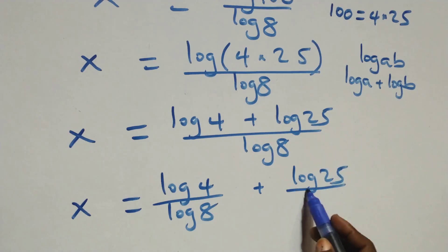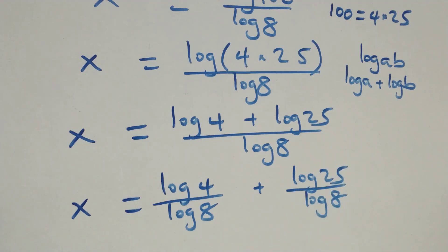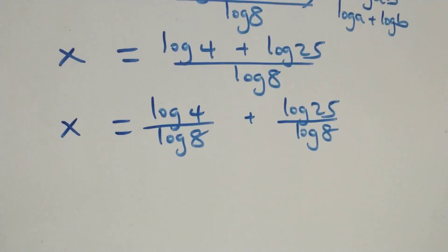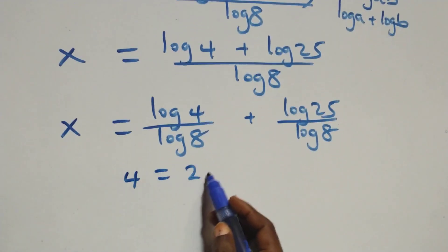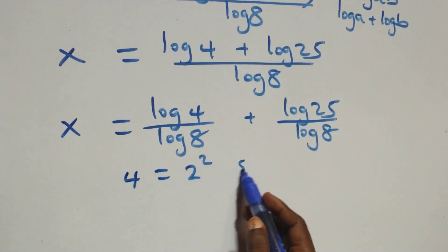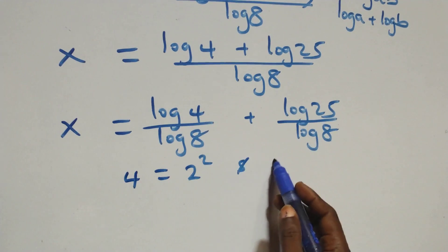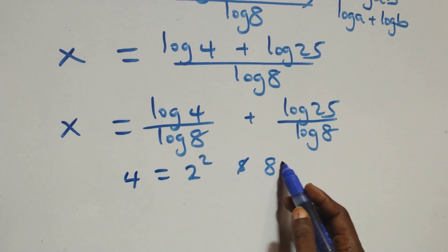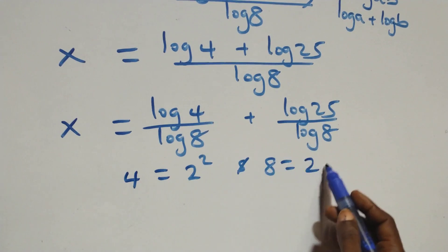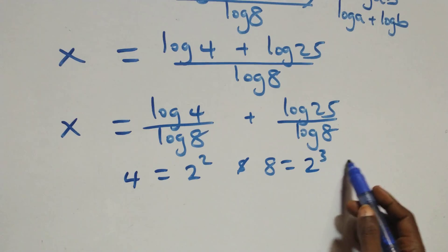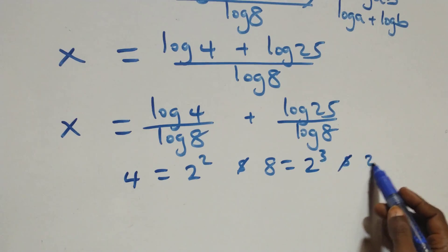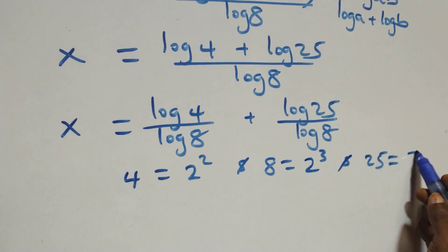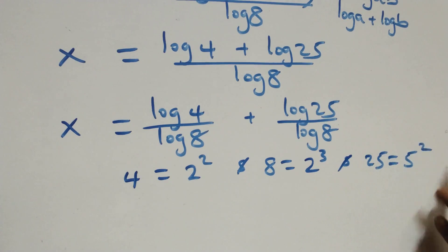From here we separate this into two fractions: log 4 over log 8 plus log 25 over log 8. Then, 4 can be written as 2 times 2, that's 2 squared; 8 can be written as 2 times 2 times 2, that's 2 cubed; and 25 can be written as 5 times 5, which is 5 squared.